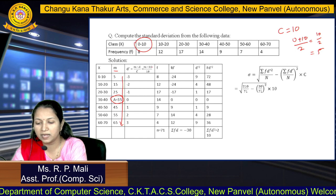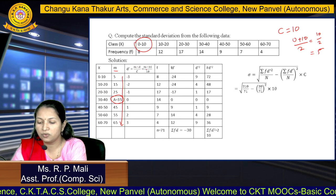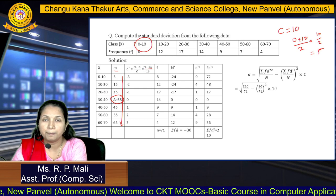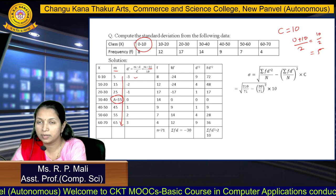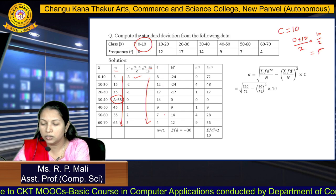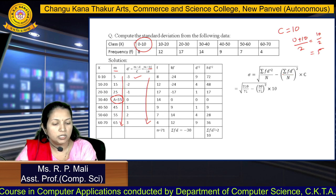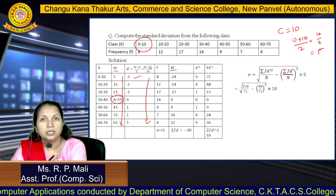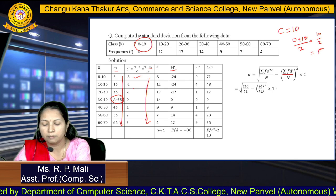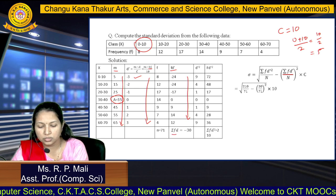We find all d' values and then compute fd': (−3)×8 = −24, (−2)×12 = −24, and so on. We sum the fd' column, and N = Σf = 71. Next we find d'²: (−3)² = 9, (−2)² = 4, and so on. Then fd'²: 8×9 = 72, 12×4 = 48, and so on. The summation of the fd'² column is 210.